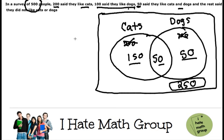Okay, first of all, let's figure it out. How many people like only cats? Well, that's going to be 150. How many people only like dogs? That's just going to be 50. How many people do not like cats or dogs? Well, that's going to be 250, right?